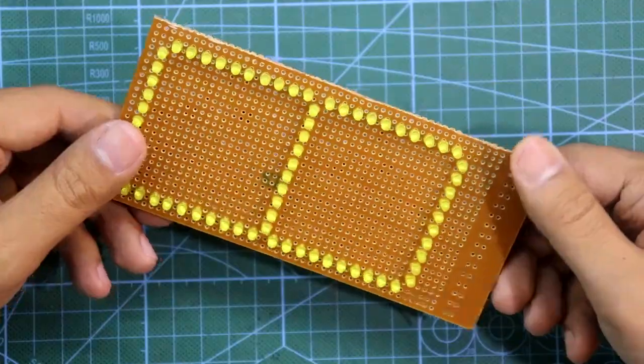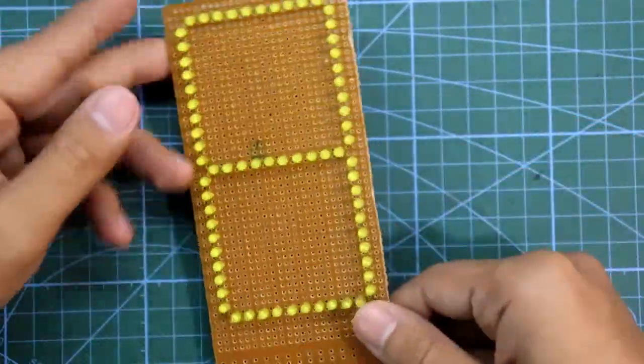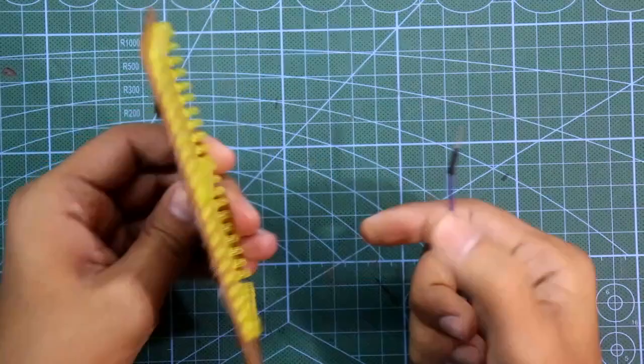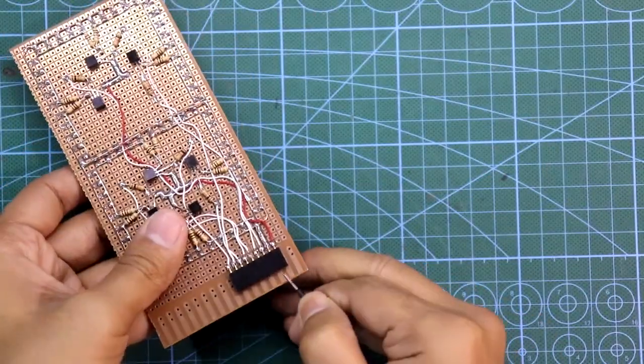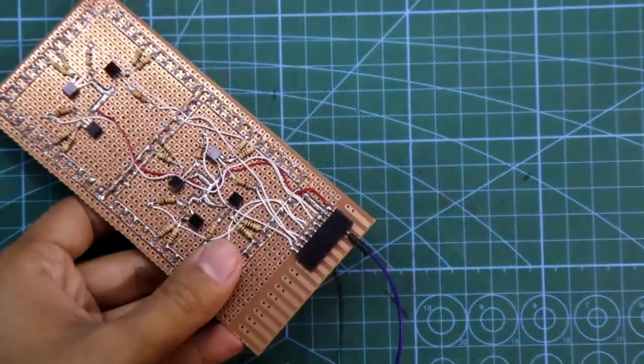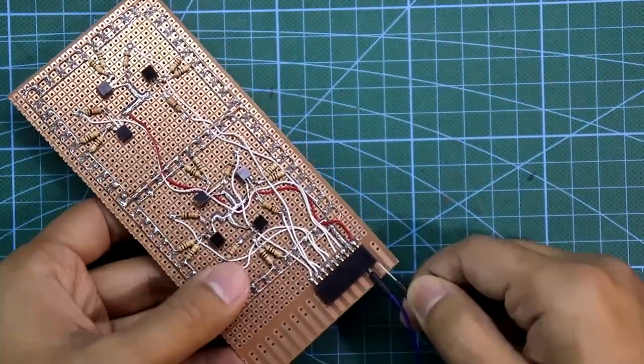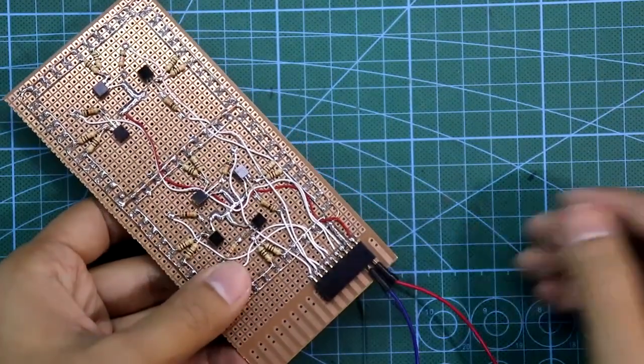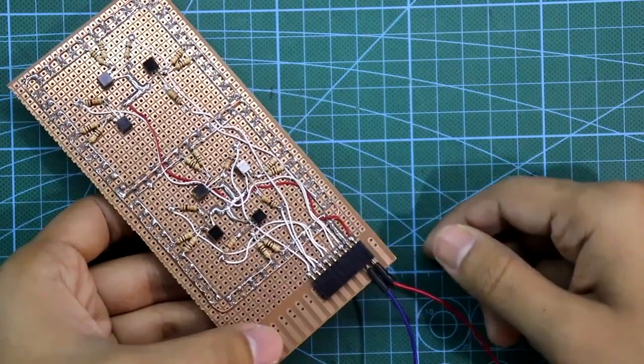7 segment display is completed. Now we have to check it. So I am putting the ground in the second point. 5 volt to the pin number 1.